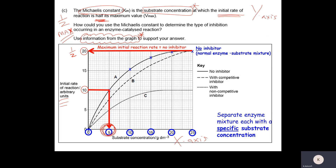Now looking at the two different types of inhibitor — the competitive inhibitor first. The maximum initial reaction rate is also 20 arbitrary units. Half of 20 is 10, and if we draw a line across where it hits the dotted curve, that gives us 7 grams per decimetre cubed. So half of the maximum initial reaction rate of 10 gives a substrate concentration of 7 — which is obviously higher than 5.